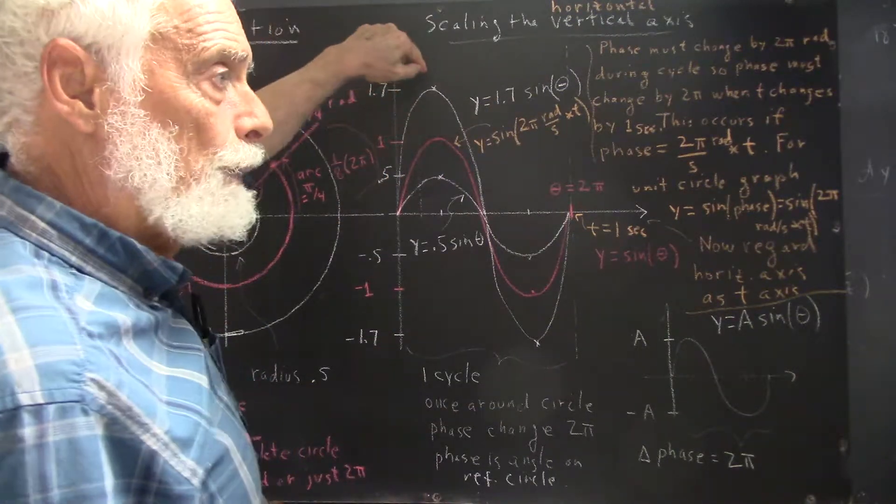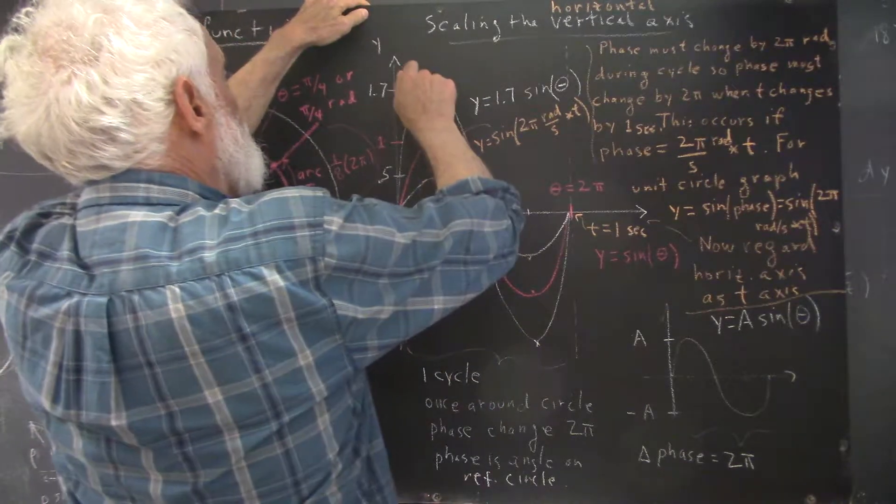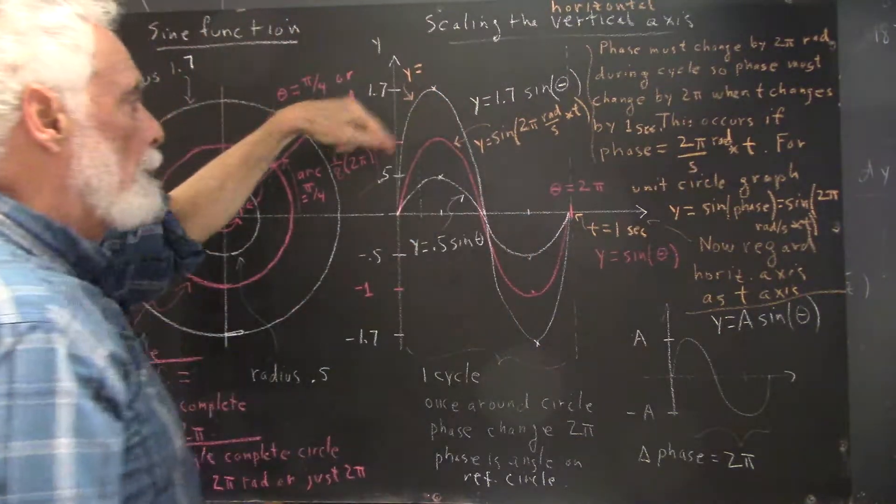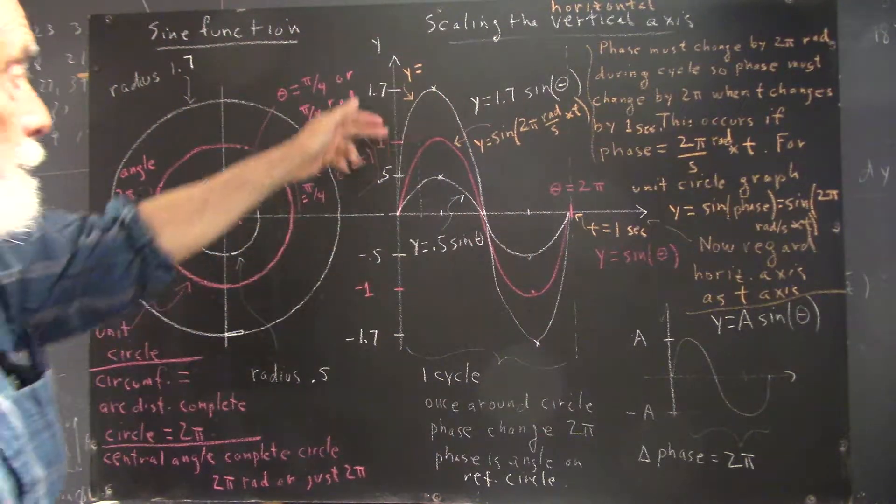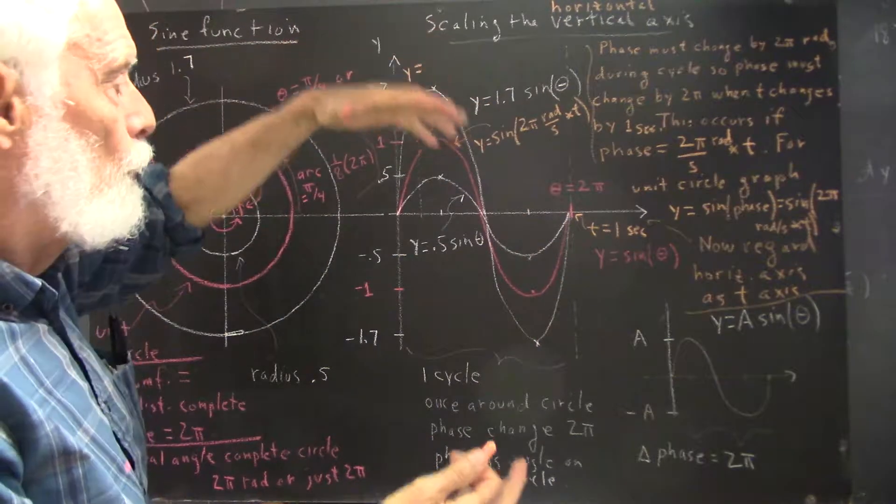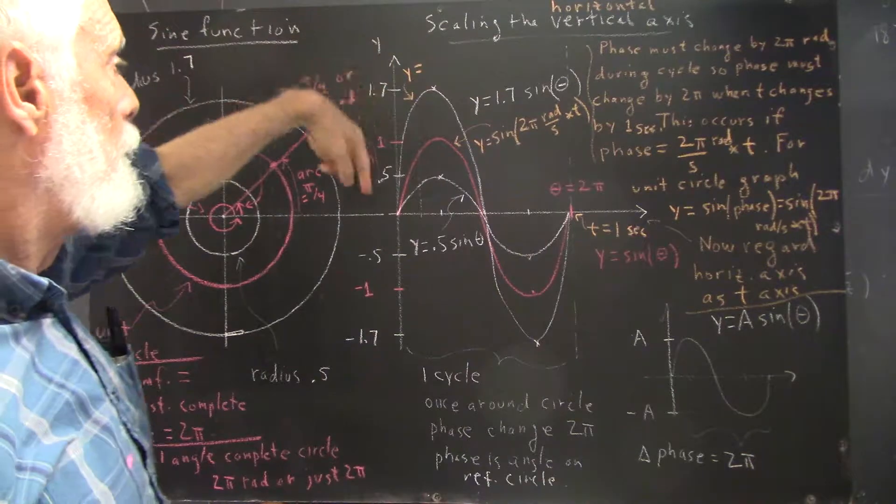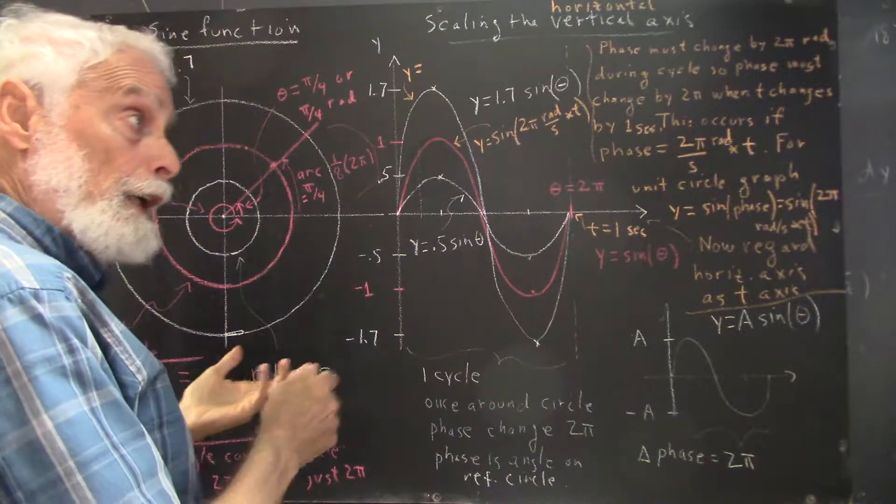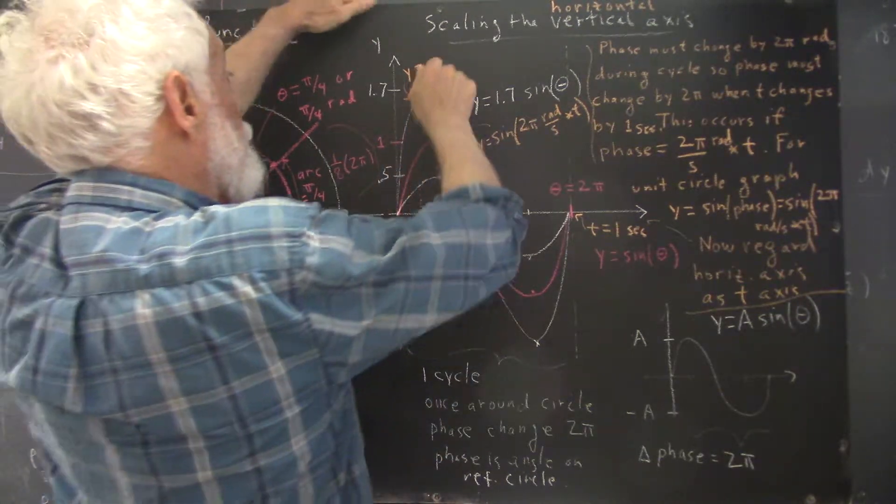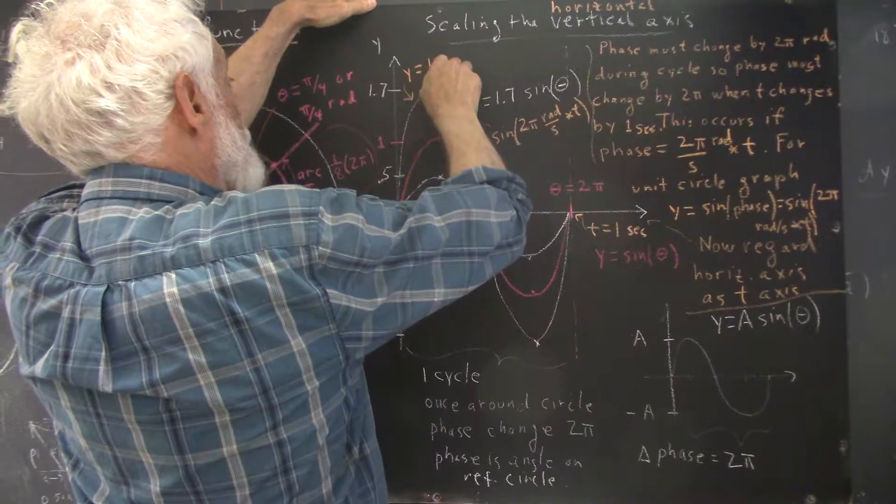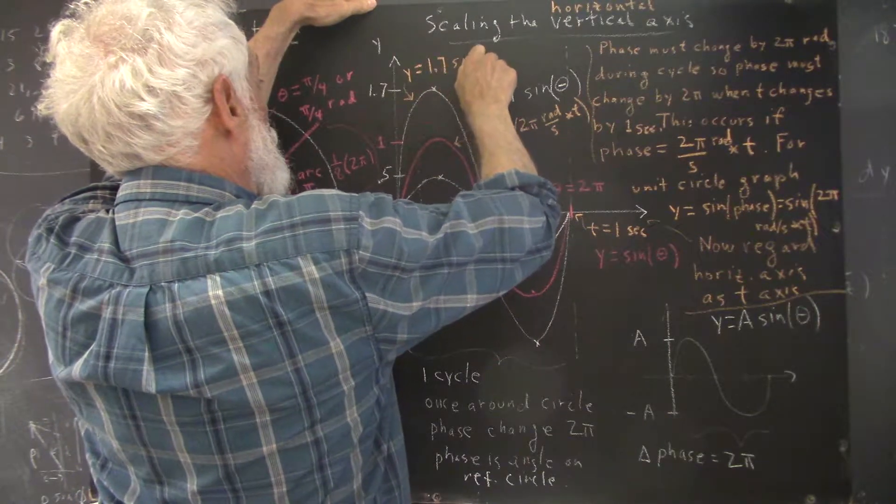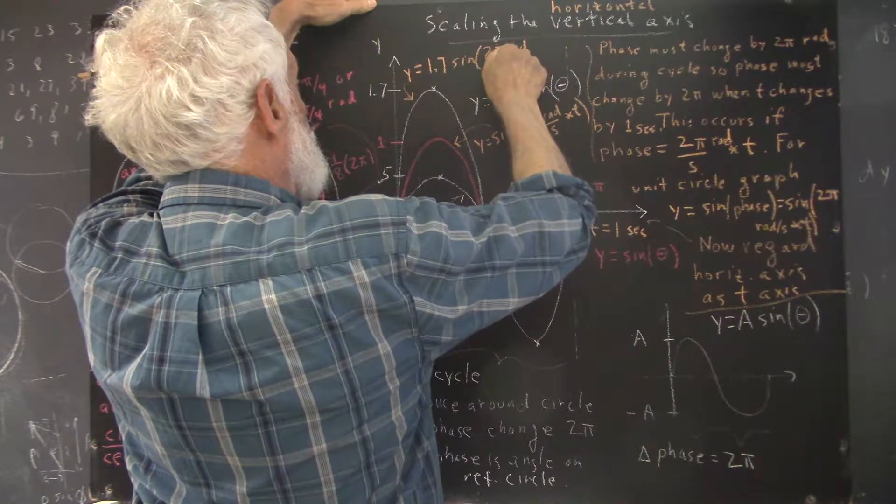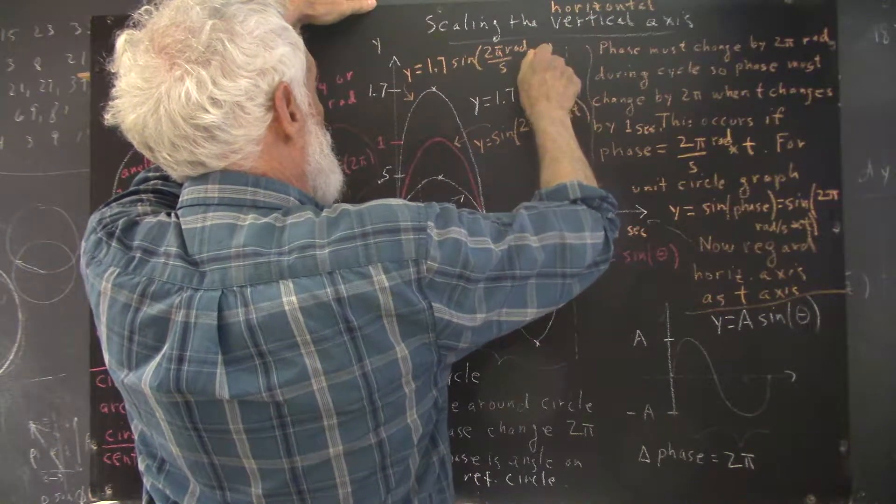Now the question is, what's the equation for this function, for the wider or the higher of the two white graphs? You should have stopped and thought about that. It's got to be 1.7 times the sine of 2π radians per second times t.